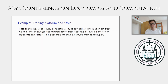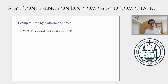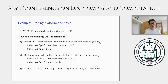We want to look at the best OSP mechanism. Let me recall the definition of obvious dominance: strategy S obviously dominates strategy S-prime if, at any earliest information set from which they diverge, the worst that can happen under S is still better than the best that could happen under S-prime, where worst and best are taken over all possible choices of opponents and nature. Sheng Wu showed that personalized clock auctions are OSP, and we prove a similar result — that the best mechanism in our setting is in fact a personalized clock auction.